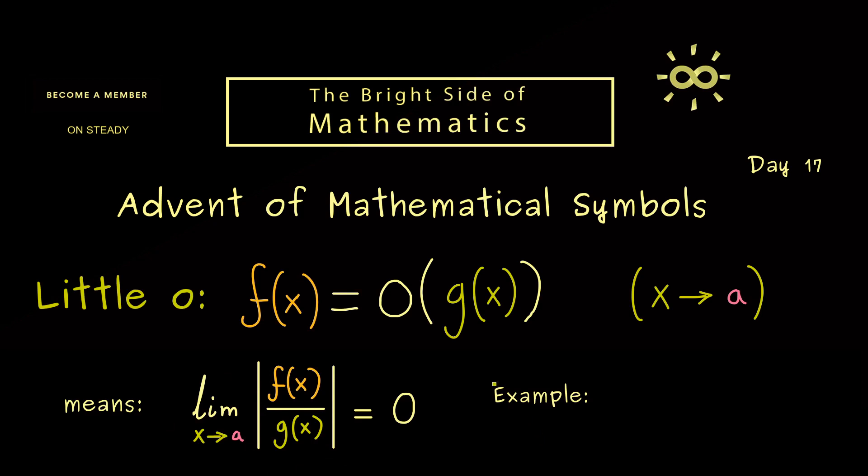Ok, then I think it's helpful to look at an example here. Here let's consider the function 8 times x squared, and the limit process we are interested in should be x goes to infinity. And now the function g should be just x squared.